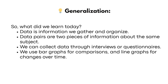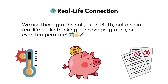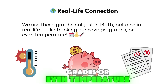So, what did we learn today? 1. Data is information we gather and organize. 2. Data pairs are two pieces of information about the same subject. 3. We can collect data through interviews or questionnaires. 4. We use bar graphs for comparisons and line graphs for changes over time. 5. We use these graphs not just in math, but also in real life, like tracking our savings, grades, or even temperature.